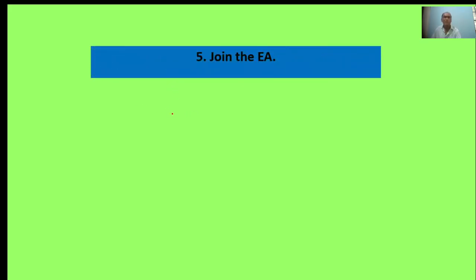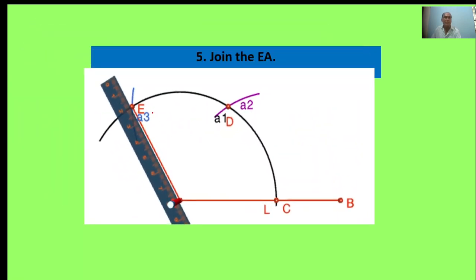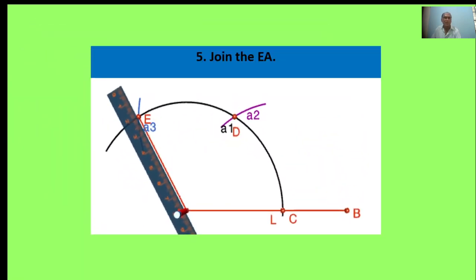Draw an arc, cut to previous arc A1. This is point E. Now join E and A. Here, the angle is 120 degrees.